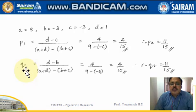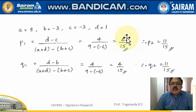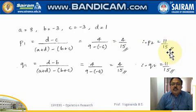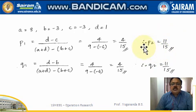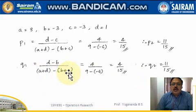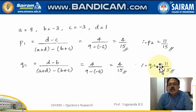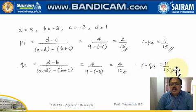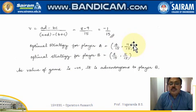If the game is played 15 times, player A will go for his first strategy 4 times, so the probability of choosing the first row is 4 by 15. The probability of choosing the second row is 15 minus 4, which is 11 by 15, meaning player A finds his second strategy more beneficial. Similarly, q equals 4 by 15, and the probability player B goes for his second strategy is 11 by 15. The value of the game is also calculated here.